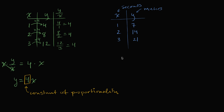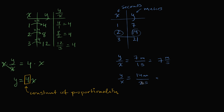I want to write that in terms of its units. Y over x, looking at this point, is seven meters over one second — that's seven meters per second. If you look at another point, y over x is 14 meters in two seconds, and 14 over two is seven, with units of meters per second. That's why this constant of seven is also sometimes considered a rate — it's distance per time.